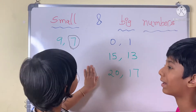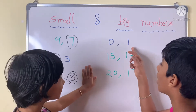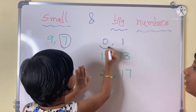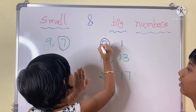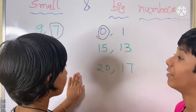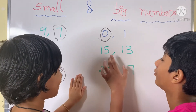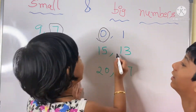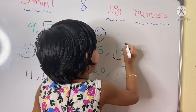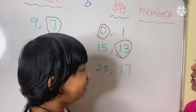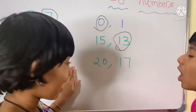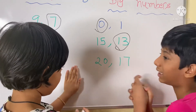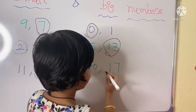Which number is small — 0 or 1? Zero. Which number is small — 15 or 13? Thirteen. Which number is small — 20 or 17? Seventeen.